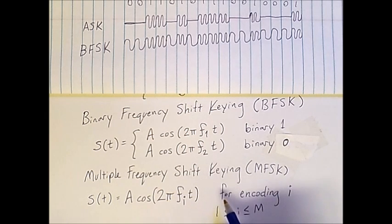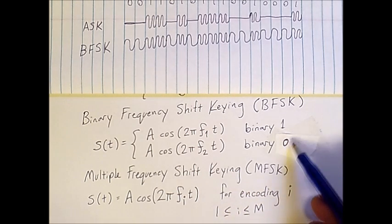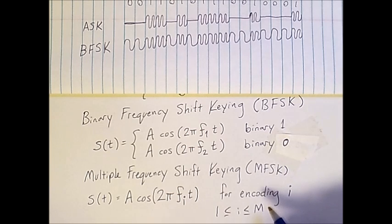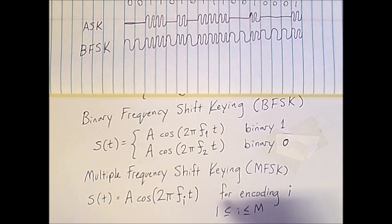The benefit of this approach is that we can encode more data per single signal element. For example, rather than simply encoding binary values of 0 and 1, we could encode values of 0, 1, 2, and 3, which would correspond to binary bits of 00, 01, 10, and 11.